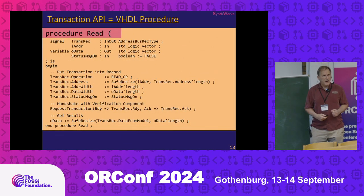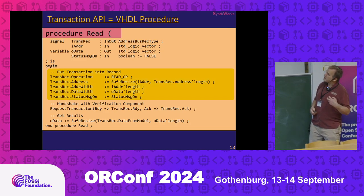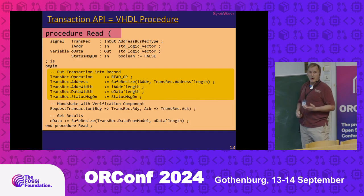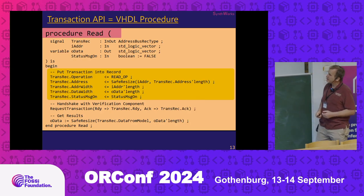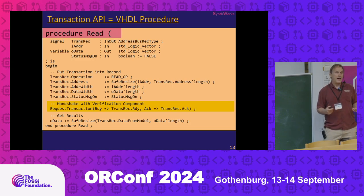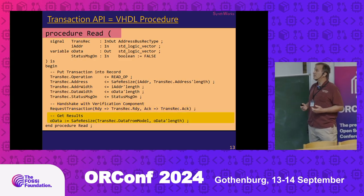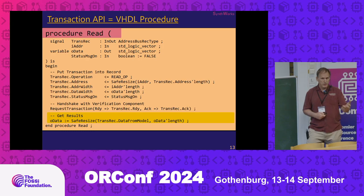Our transaction API takes things in from its interface and stuffs them into the record to hand off to the verification component. At this point we're agnostic to what interface we're working with — we're just feeding the verification component the information and then we tell the verification component we have something for it. We call this request transaction, which is a standard part of our library. When we get things back, we grab it and send it back on the interface to the calling procedures.